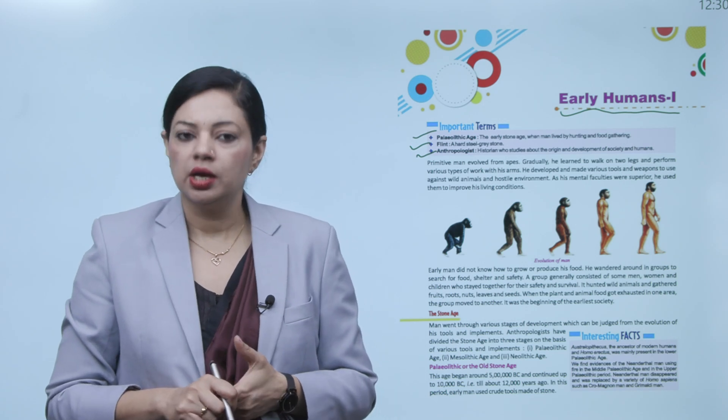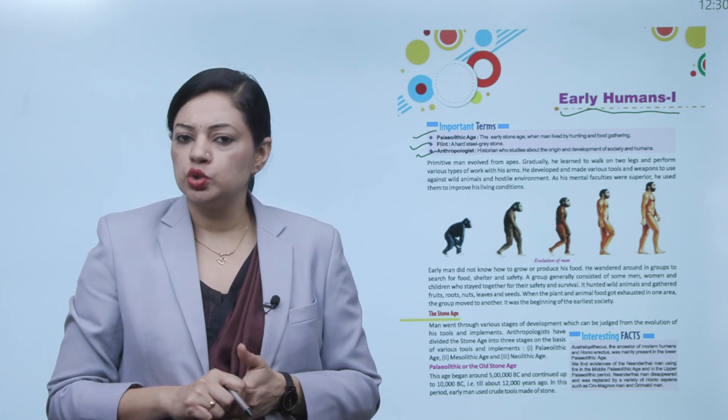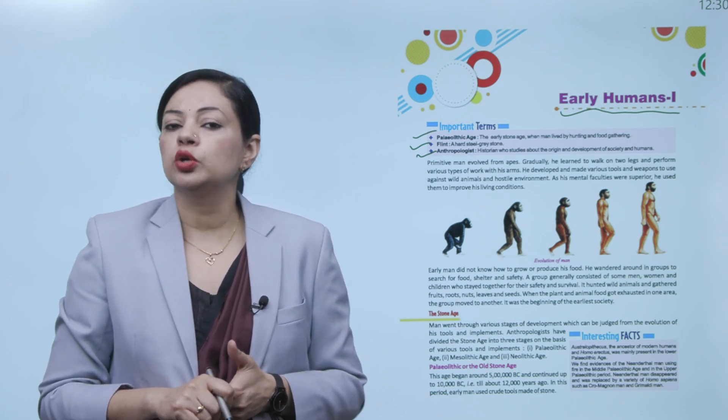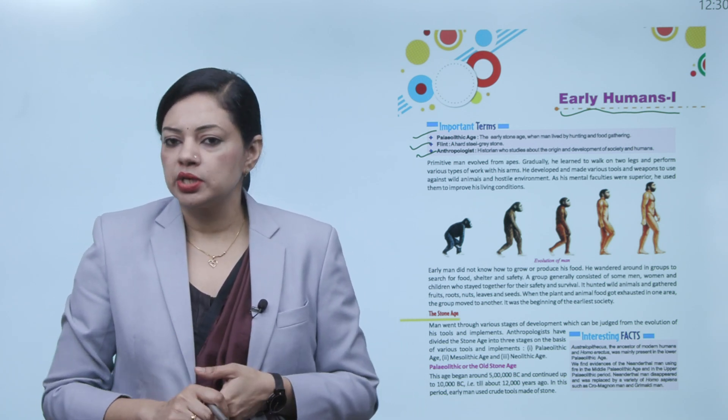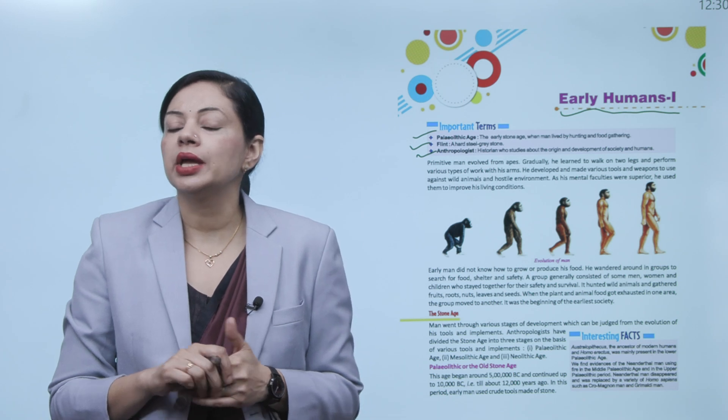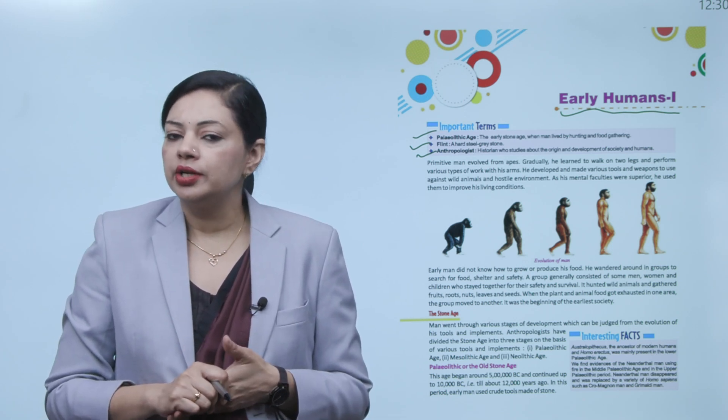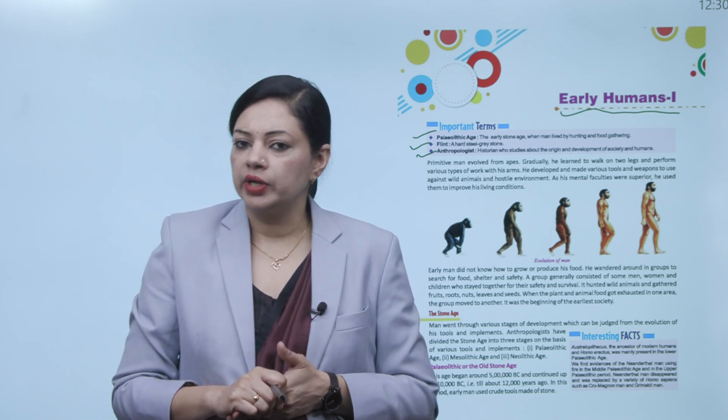Early man did not know how to grow or produce his food. Early man didn't know how to grow crops or produce food. What they did was move in groups from place to place in search of food, shelter, and safety.